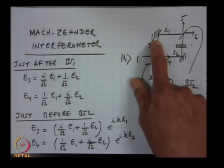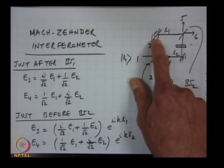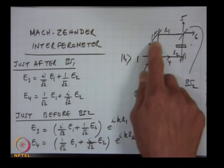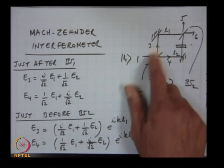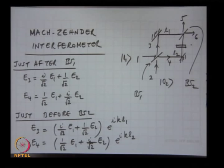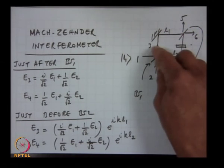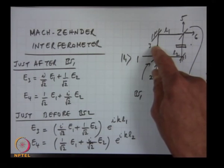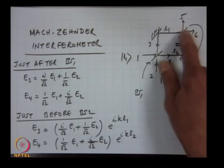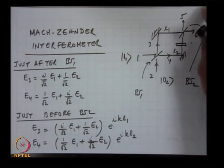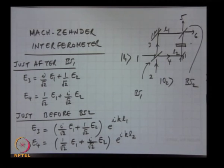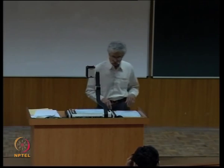This interferometer has a very interesting consequence: it allows interaction-free measurements. You can determine there is an object in arm 3 without the photon having gone through arm 3 at all — without having interacted with the object. For example, if you block arm 3 (which acts like a detection), there is a finite probability for the photon to take the other arm, and you can infer the presence of the object. This and other counter-intuitive aspects of the Mach-Zehnder interferometer will be discussed in the next class.